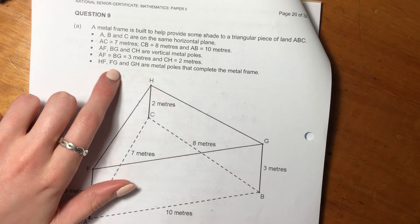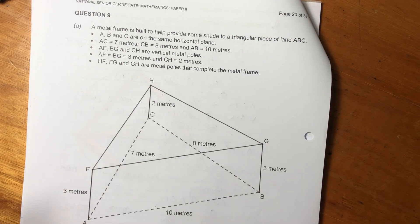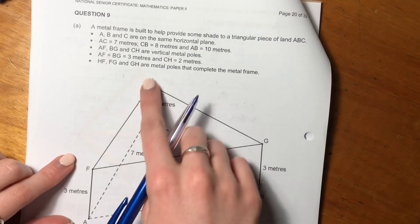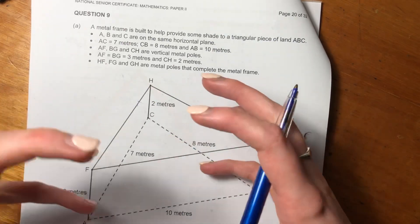Then it says HF, FG, and GH are metal poles that complete the metal frame. So they're basically saying these are just poles. Basically saying that there is a 3D aspect to this.